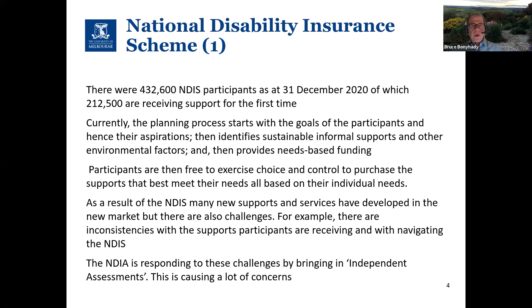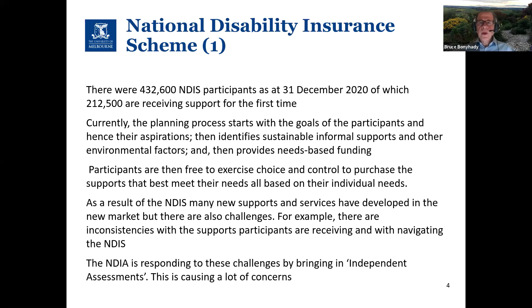The National Disability Insurance Scheme, or NDIS, had 430,000 participants at December of last year, and most importantly, over 200,000 of those people were receiving individualised supports for the first time. When you're an NDIS participant, the process starts with your goals and aspirations, identifies sustainable informal supports and environmental factors, and then provides needs-based funding. Once participants have their plan and their reasonable and necessary supports, they're free to choose and purchase the supports that best meet their needs.